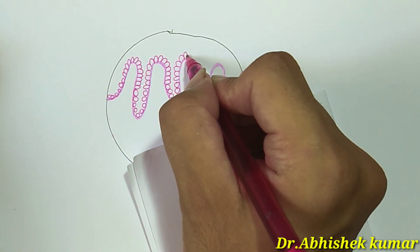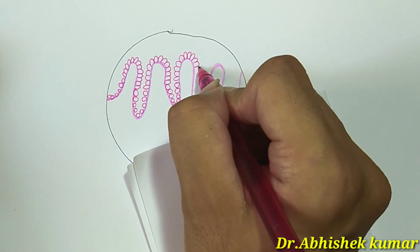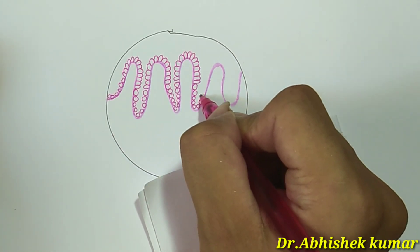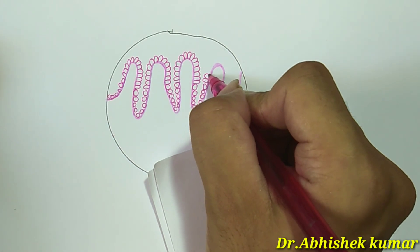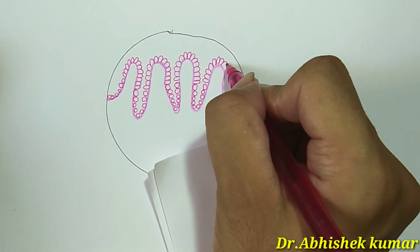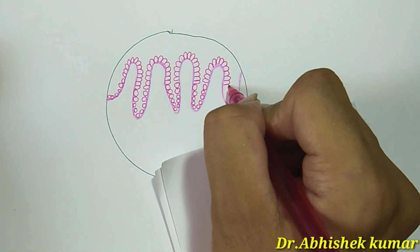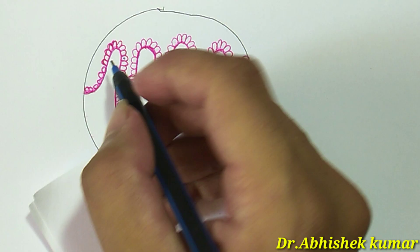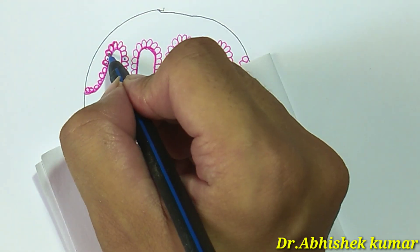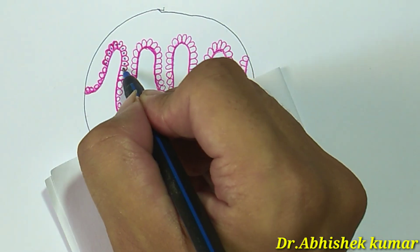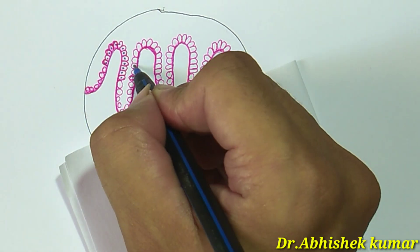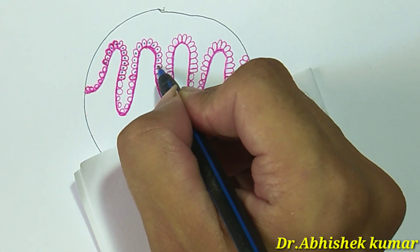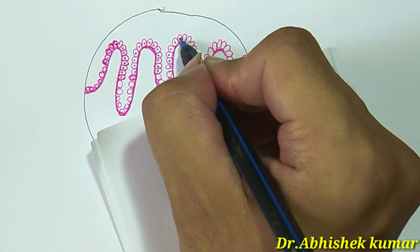Here we are drawing the simple tall columnar epithelium along with the parietal cells and chief cells. The simple columnar epithelium secretes mucus that lubricates and protects the epithelial surface from the acid content of chyme.